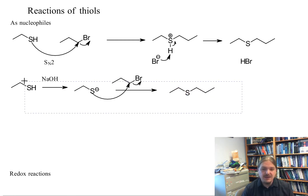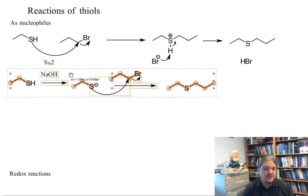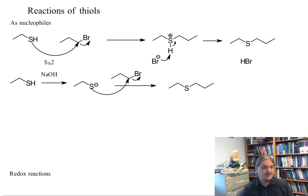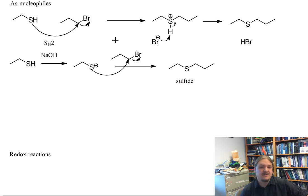But it also avoids the neutral nucleophile generating acid kind of problem. And so the product of the reaction of thiol with an alkyl halide is a sulfide. And this is one way that we can make sulfides.